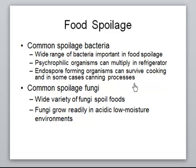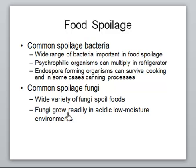Common food spoilage by bacteria could involve a wide range of bacteria. They could be psychrophils, for instance, like organisms that could multiply in a refrigerator. Psychrophils are microorganisms that could grow at lower temperatures. That indicates that even a refrigerator cannot stop their growth, because they already prefer low temperatures. More commonly spoilage is caused by bacteria; less commonly it could be caused by fungus.